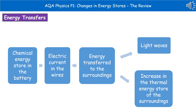One of the main destinations will be the thermal energy store of the surroundings — because if you put your hand near the end of a torch, it is warmer. But we will also see energy being transferred to the surroundings by light waves as well, because the whole purpose of our torch is to actually light the area.